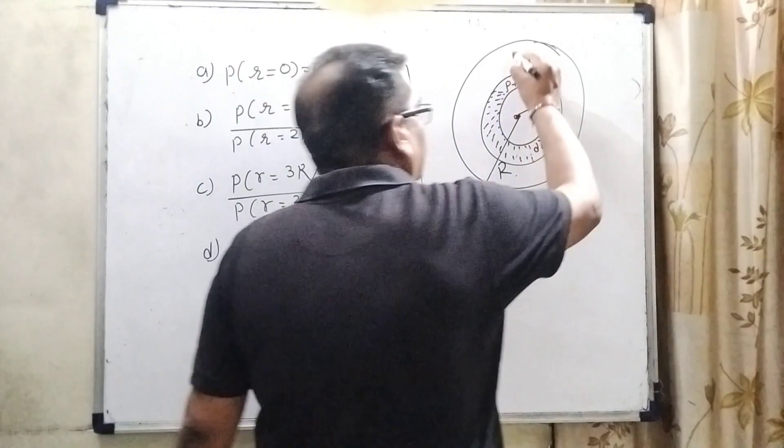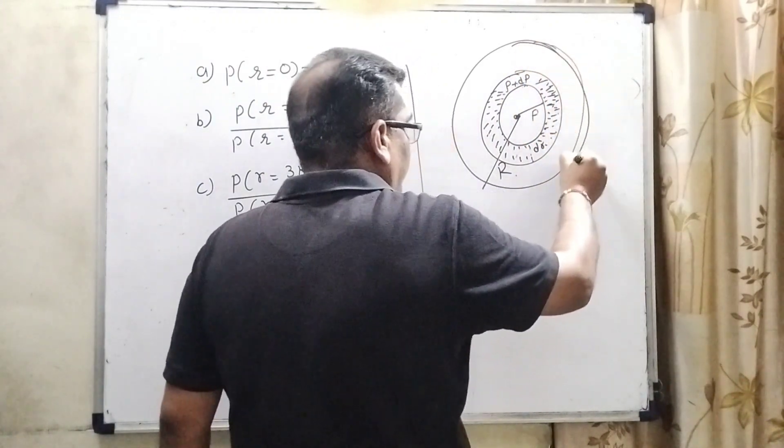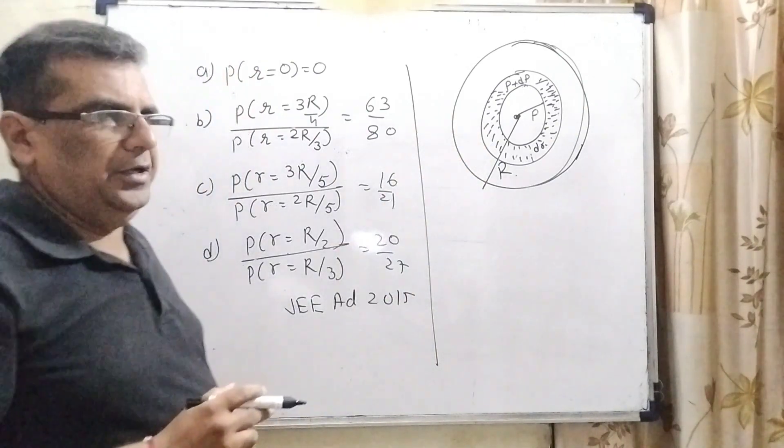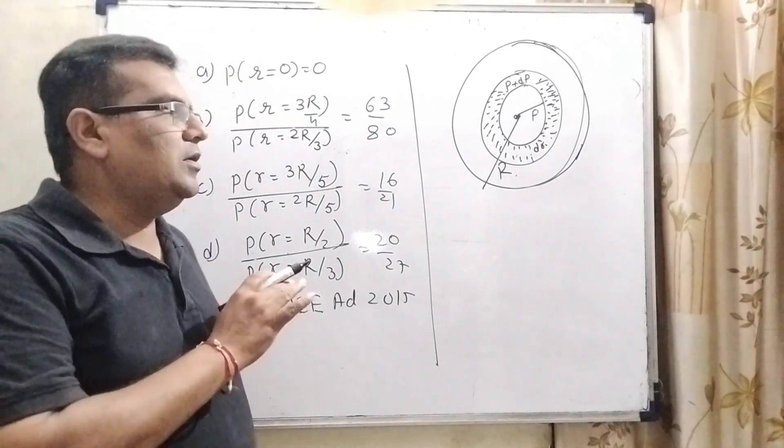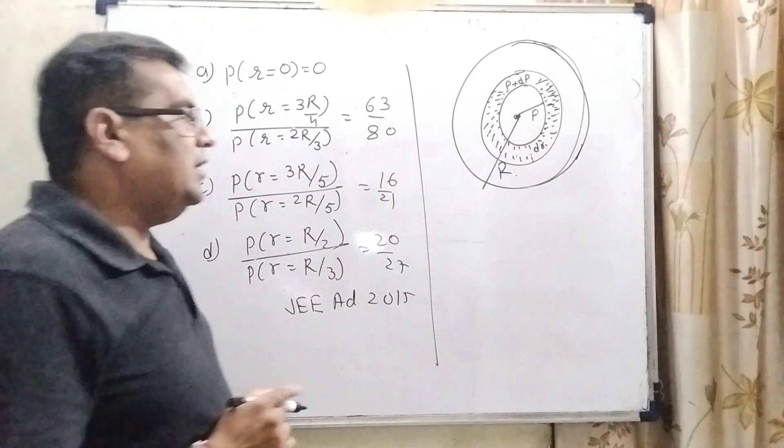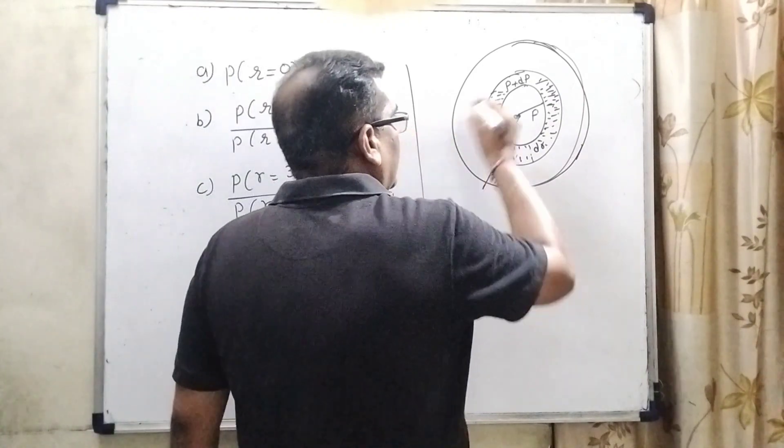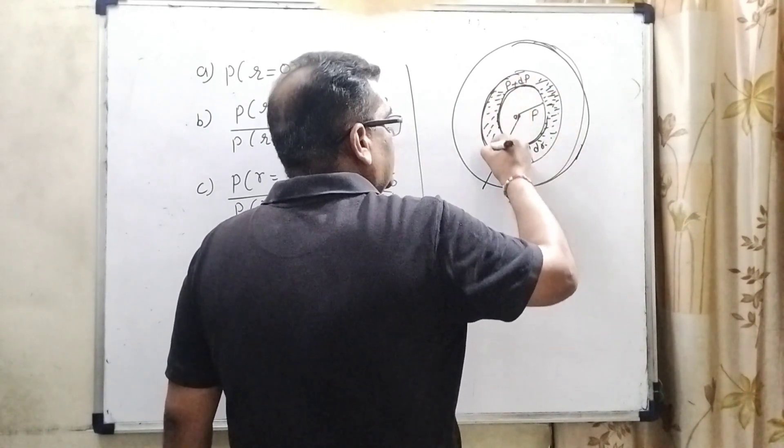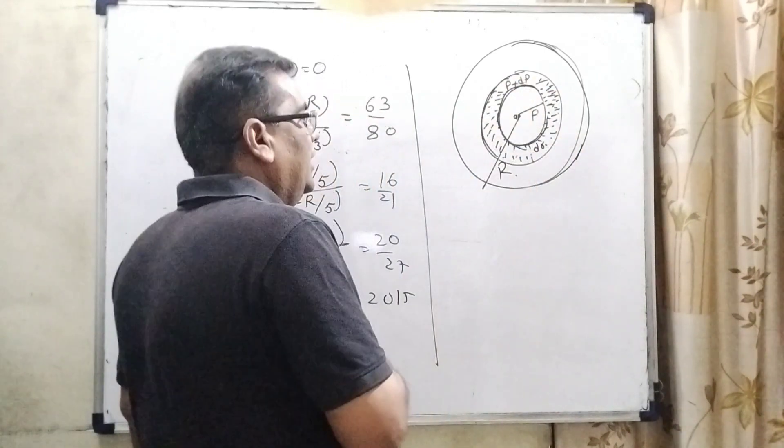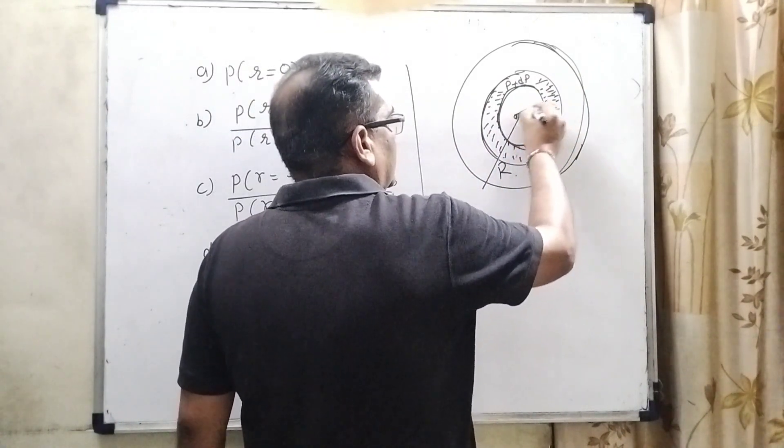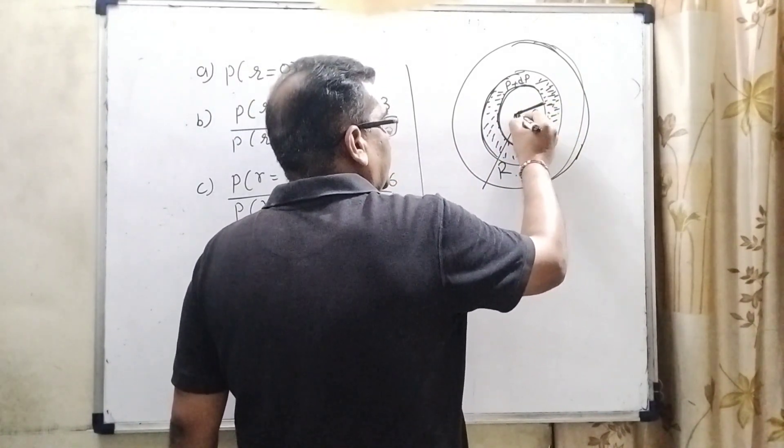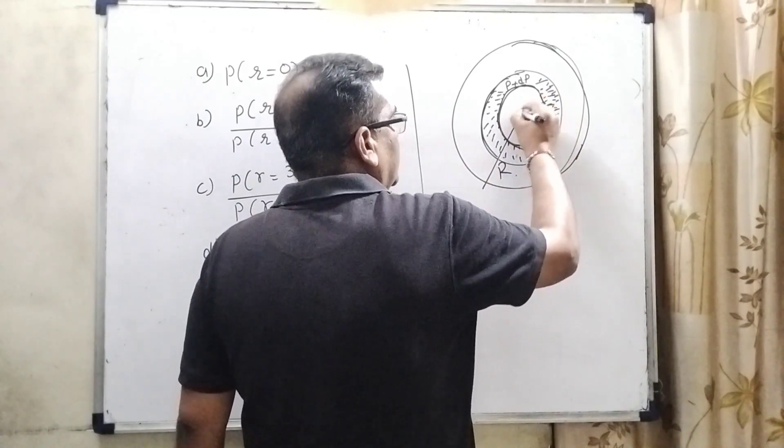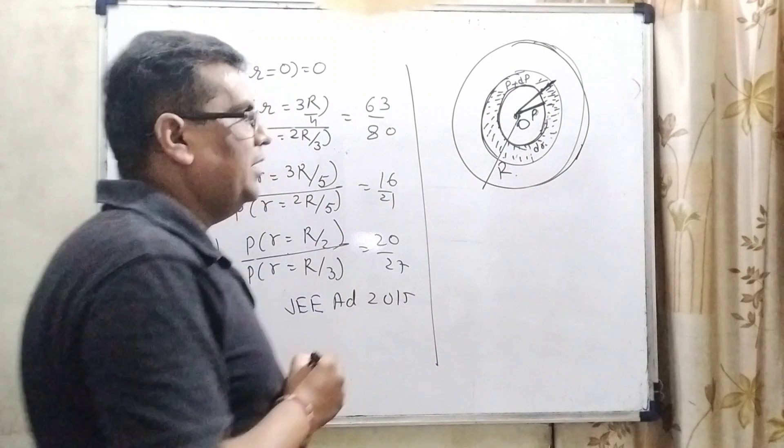In this question, here we have given a sphere and liquid consists inside it and its density remains constant everywhere. Let us first consider a small element ring which consists of the liquid and let us consider the pressure inside this point, in the center, the inner part is P and the outer part is P plus dP.